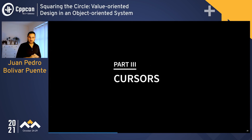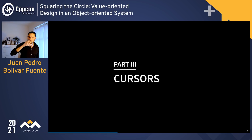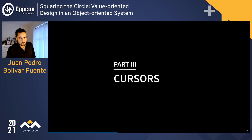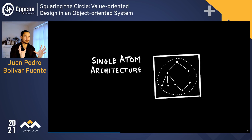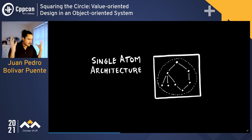This is the part where we're going to talk about cursors. Let's look again at our ideal picture: the Single Atom Architecture has one big object — one object that's not large in its interface — that has the whole data model of the application stored as one value.